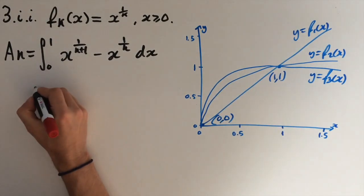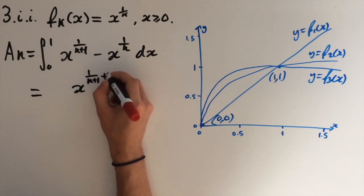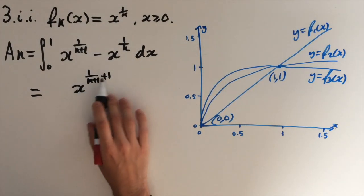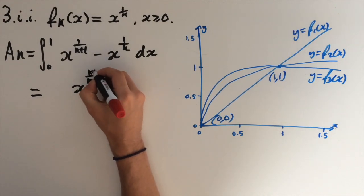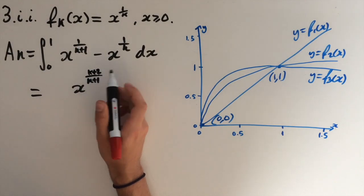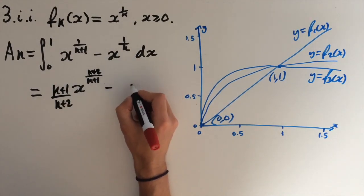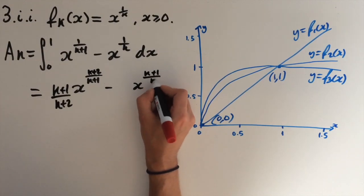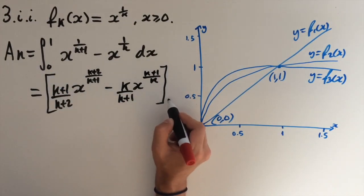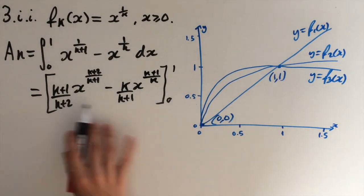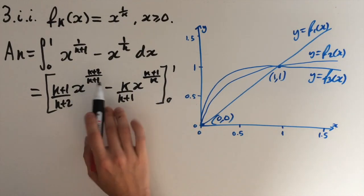So we just need to evaluate this integral now. It's a simple polynomial, so we raise the power by 1. So 1 over k plus 1 plus 1 — we can simplify this to k plus 2 over k plus 1. And we multiply by the reciprocal of the power, so we get k plus 1 over k plus 2 in front. In a similar fashion we can do the same to the second term, giving us k plus 1 over k with a factor of k over k plus 1. This is between the limits x equals 0 and x equals 1. For x equals 0 it all cancels to give 0, so we just need to evaluate at x equals 1, and 1 to the power of anything is still 1.